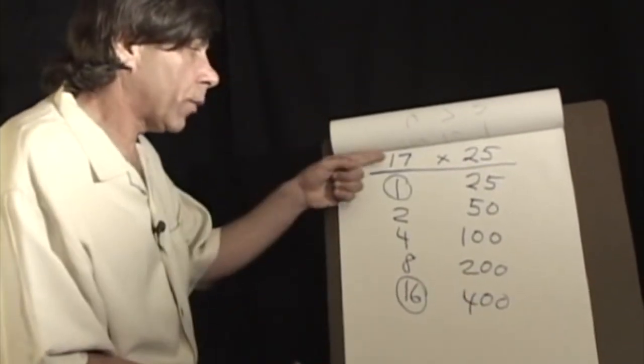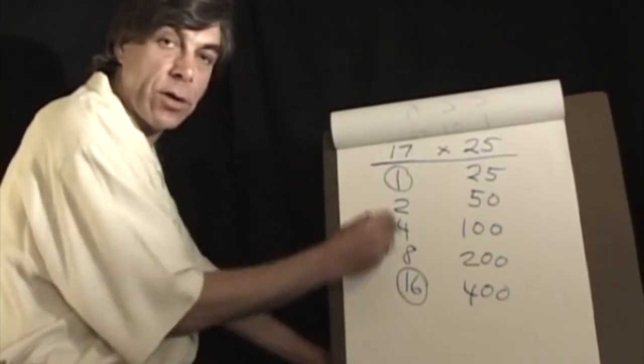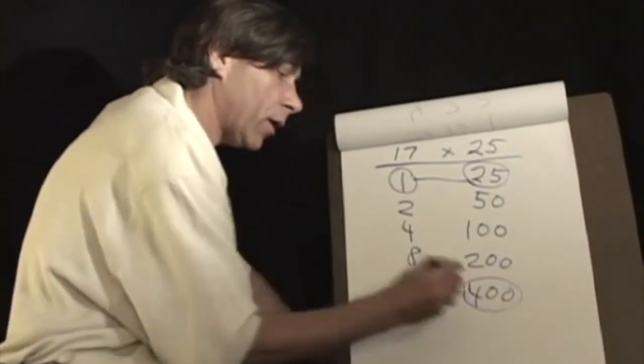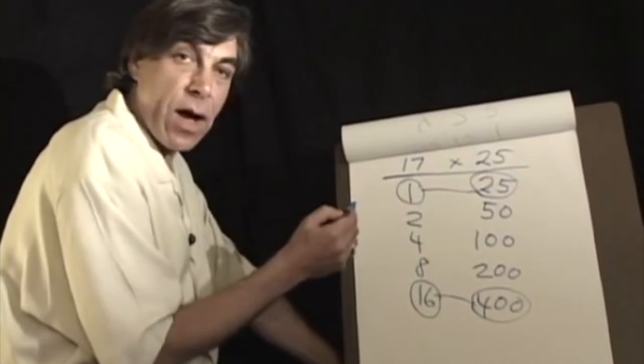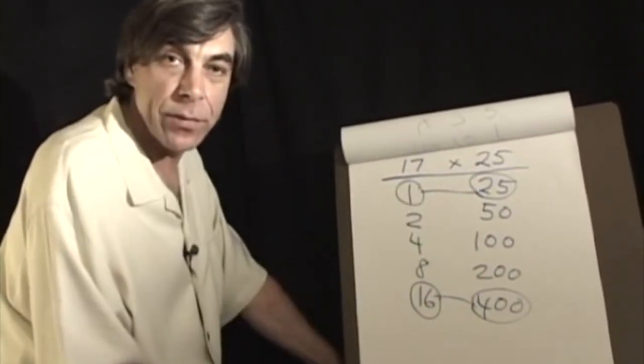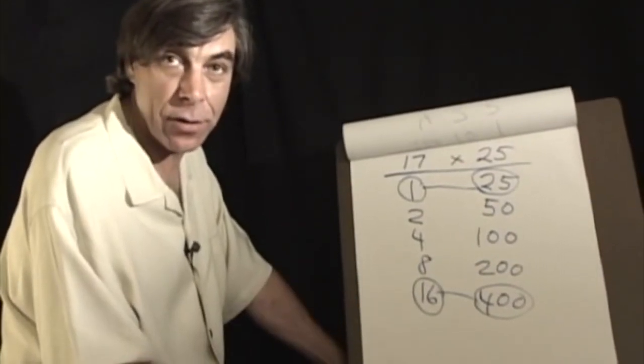So in order to know the product of seventeen times twenty-five, we just have to look at which numbers are circled over here and circle the corresponding ones over here and add them together. So seventeen times twenty-five is four hundred plus twenty-five, or four hundred and twenty-five. It's that simple. No memorization, no times table, no tears in the third grade about this.